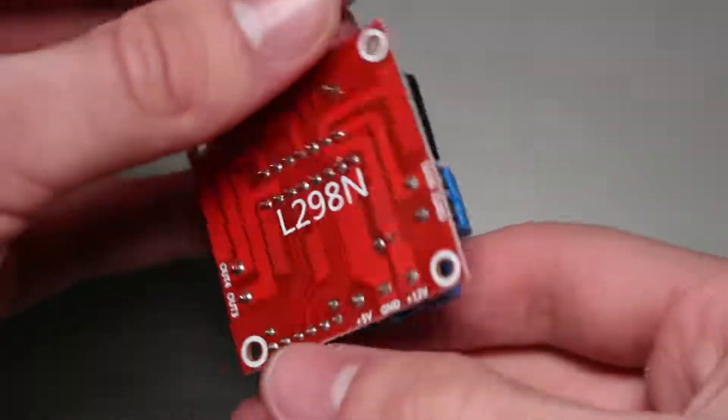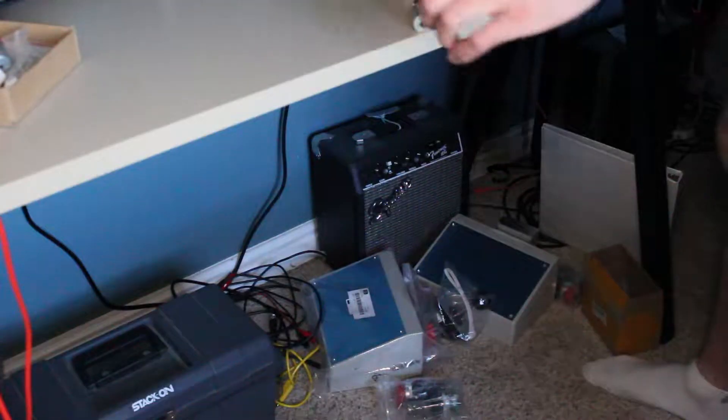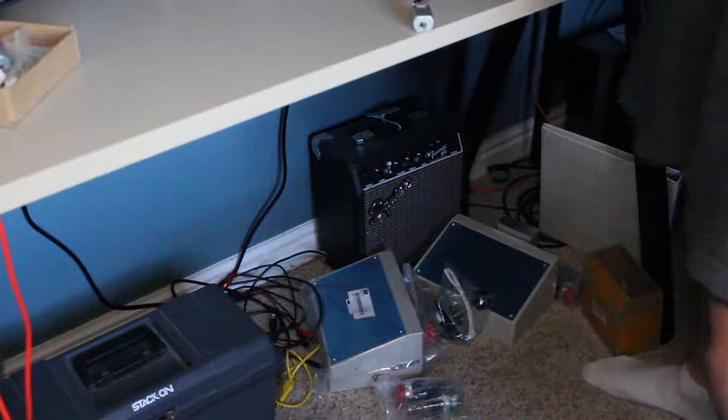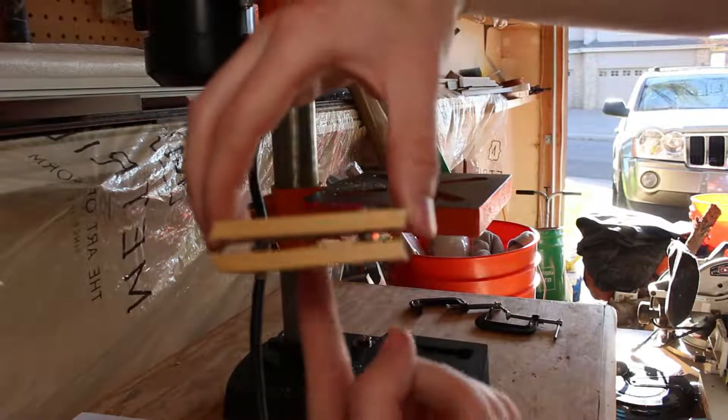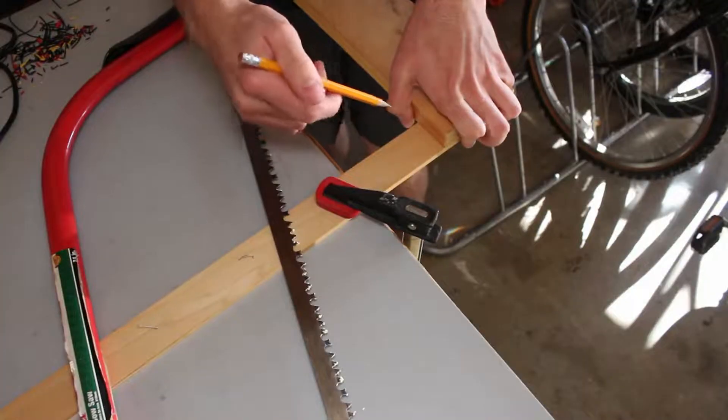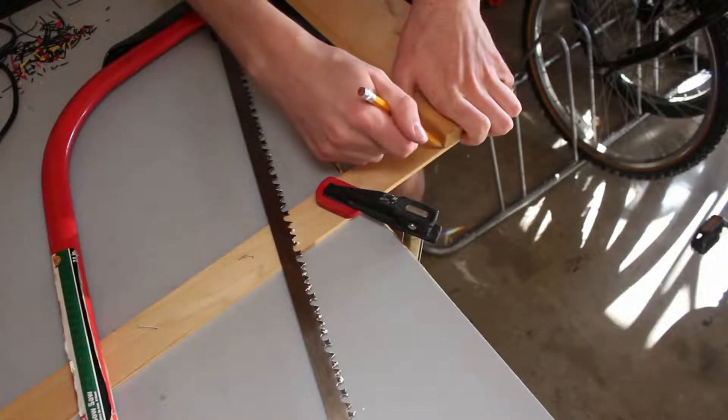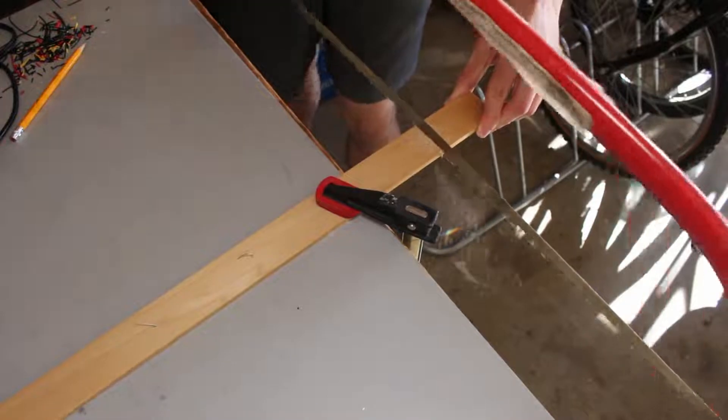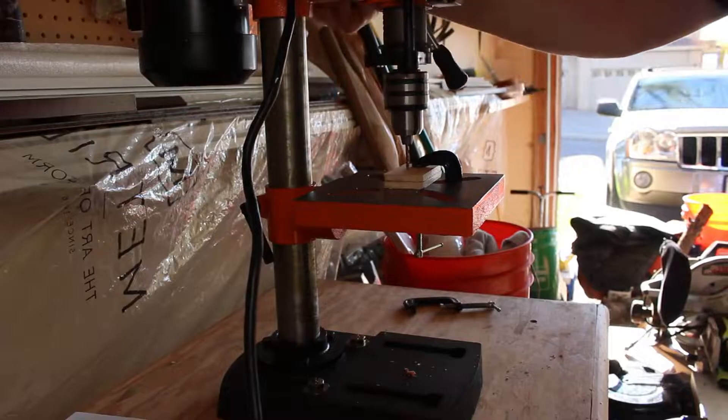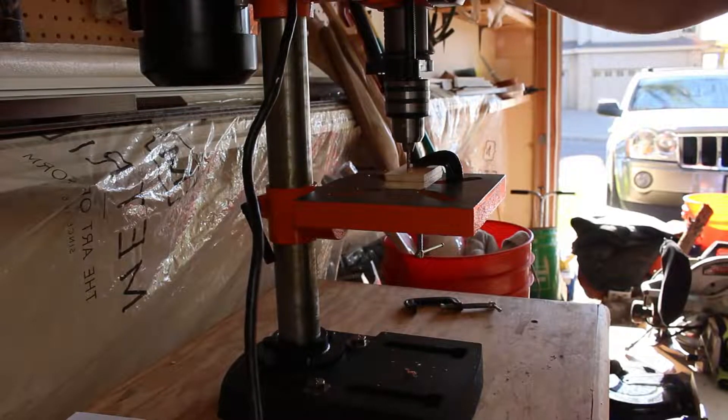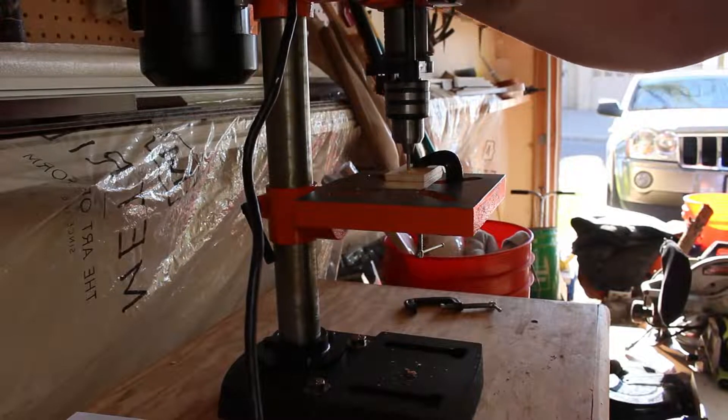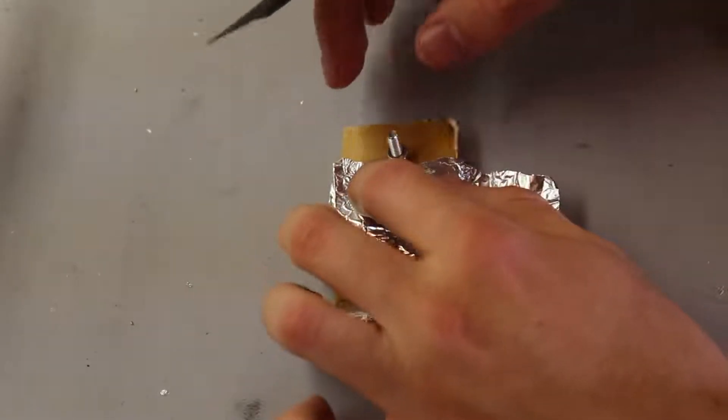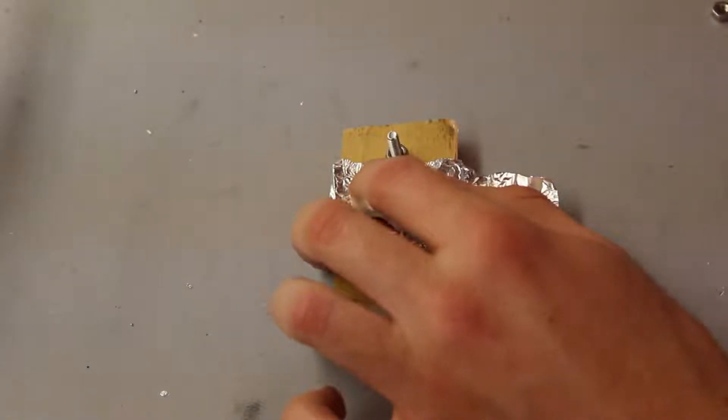The second major problem we need to overcome is detecting when the spider reaches the top. I came up with this simple mechanical solution to act as a button. To make it, I first cut this long piece of wood into two smaller rectangles. Then I put them both under the drill press and made three holes. I made sure the holes were big enough by fitting some M4 screws through. I then put tinfoil on the bottom layer. The tinfoil was directly touching one screw but not the other.